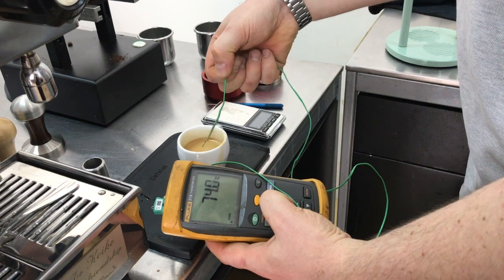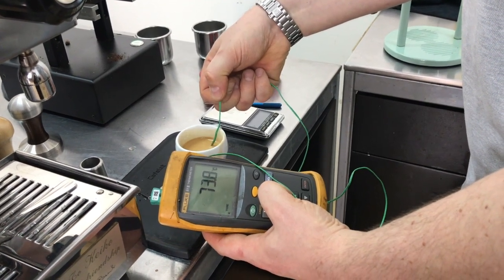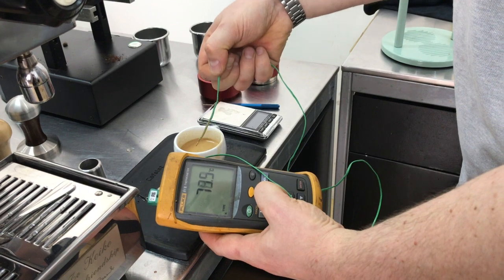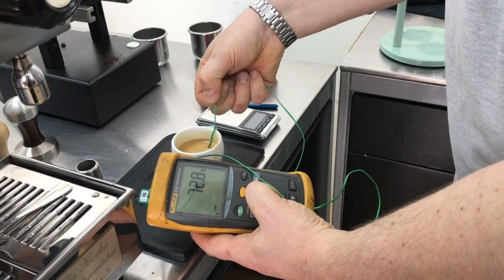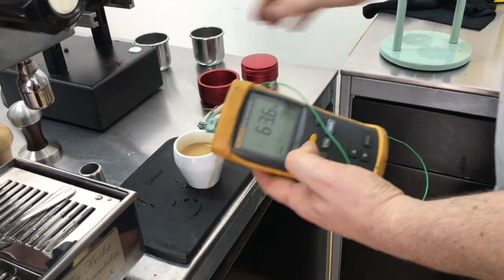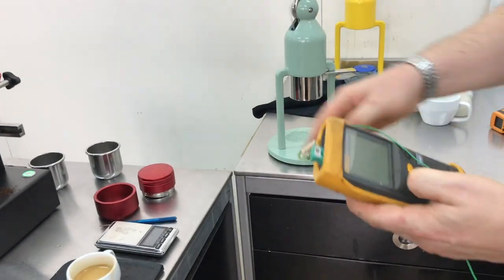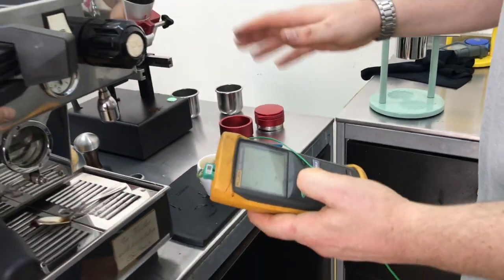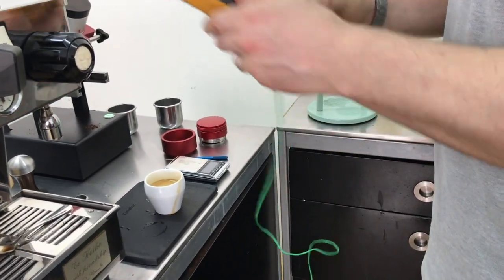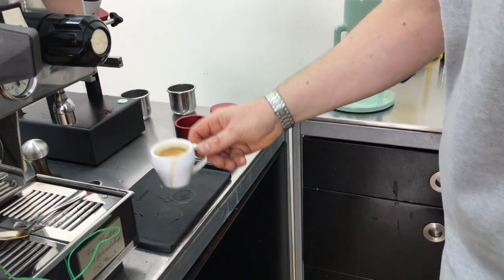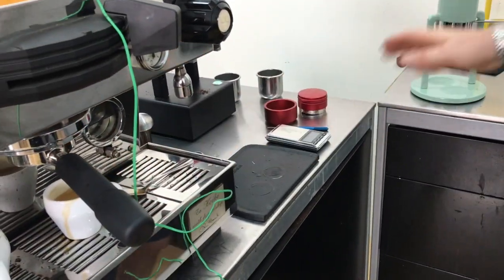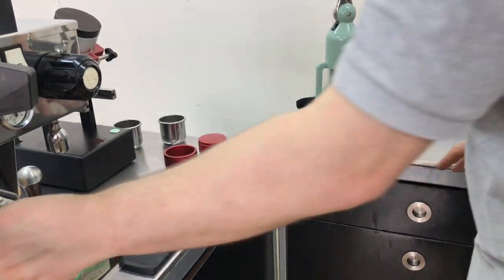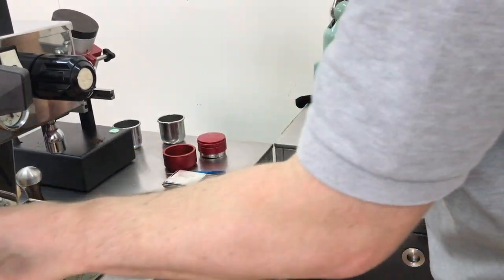I'm trying to support the La Marzocco here. So 74, 73, so you can see it's still hot when it gets into the cup. You can't really draw much comparison between the two. But as you can see, it's still hot when it reaches the cup.